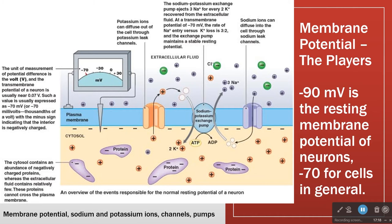Neuronal cells have a slightly lower resting membrane potential of minus 90. There are a couple of other rare exceptions, but generally you can assume minus 70 as the resting membrane potential.